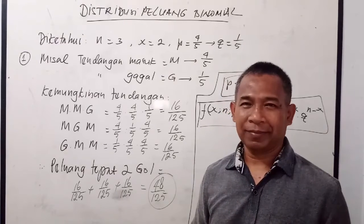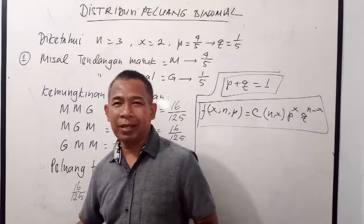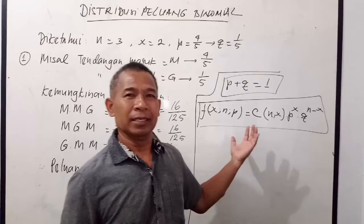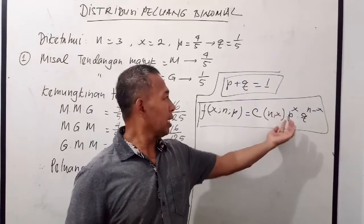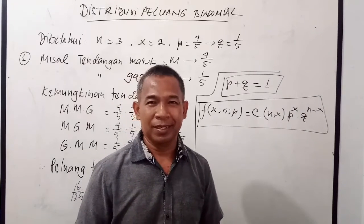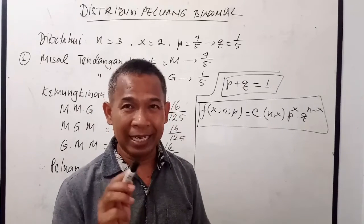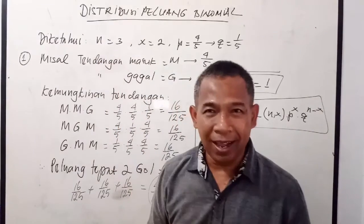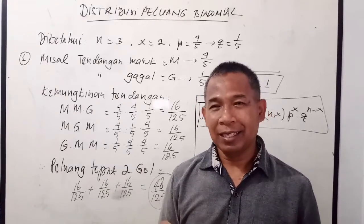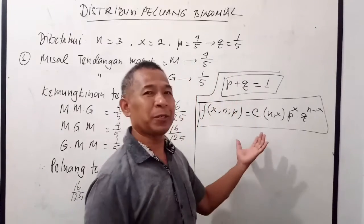Sekarang pertanyaannya, bagaimana apabila kita jawab dengan menggunakan rumus peluang binomial yang sudah kita bahas, yaitu kombinasi dari N dan X dikali P dipangkat X dikali Q dipangkat N dikurangi X? Apakah hasilnya akan sama? Tentunya harus sama, baik secara manual maupun dengan menggunakan rumus peluang binomial. Tadi kita sudah mengidentifikasi bahwa N=3, X=2, P=4/5, dan Q=1/5. Sehingga peluang tepat 2 gol tinggal kita masukkan ke rumus ini.